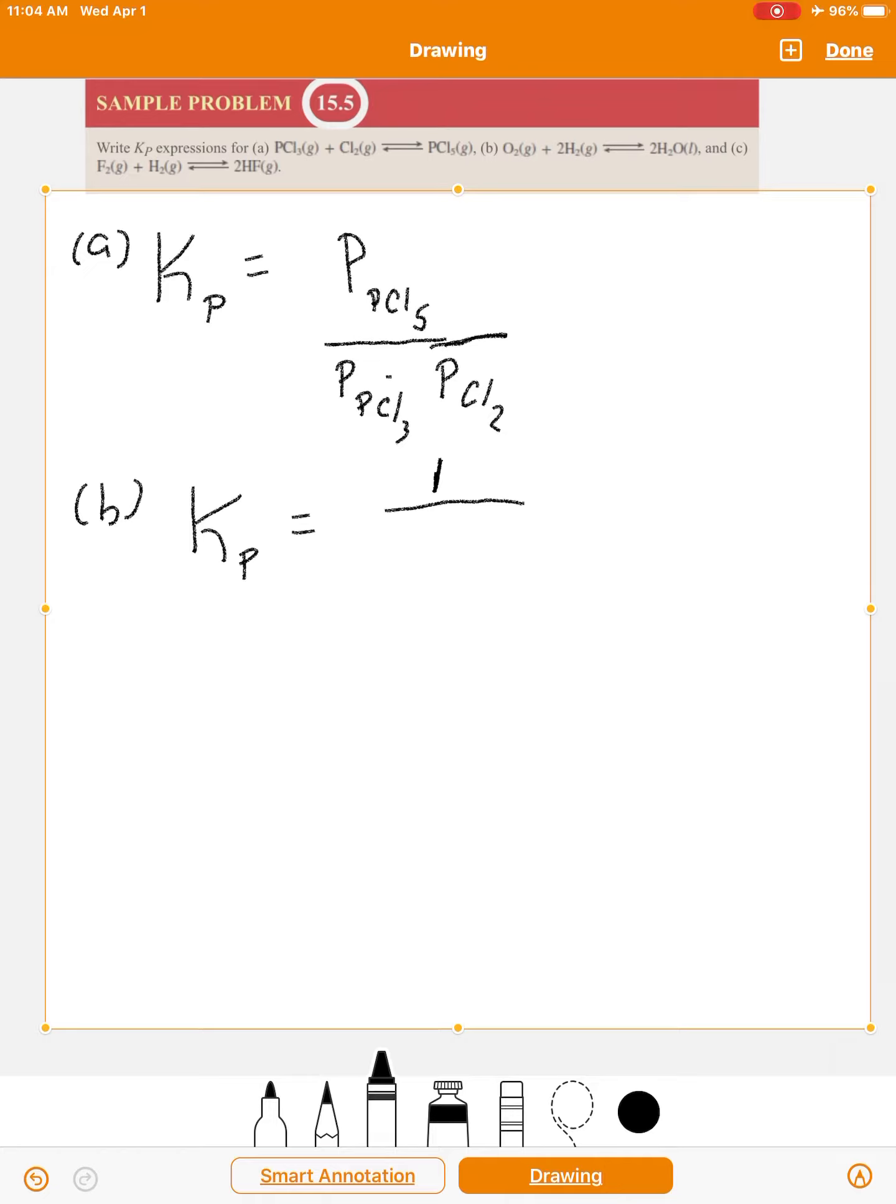Just like we did in the previous sample problem. So 1 divided by the pressure of O2 divided by the pressure of H2, but notice there's a coefficient of 2, so you square it.